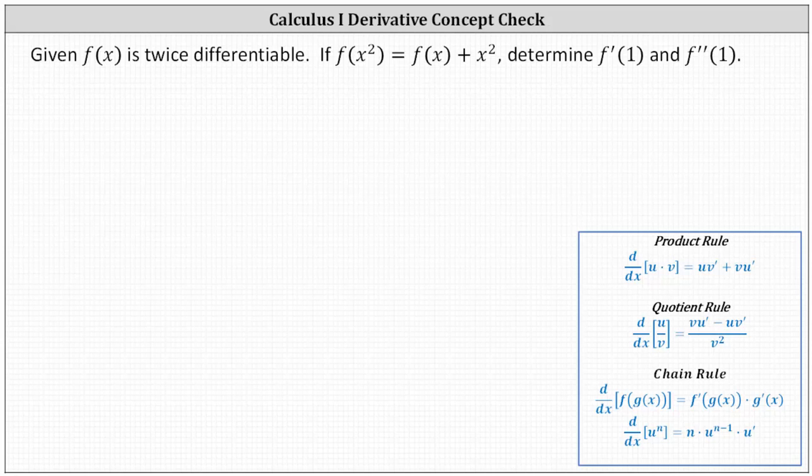Here's a nice Calc 1 derivative concept check question involving the chain rule as well as the product rule. Given f of x is twice differentiable, if f of x squared equals f of x plus x squared, determine f prime of one and f double prime of one.